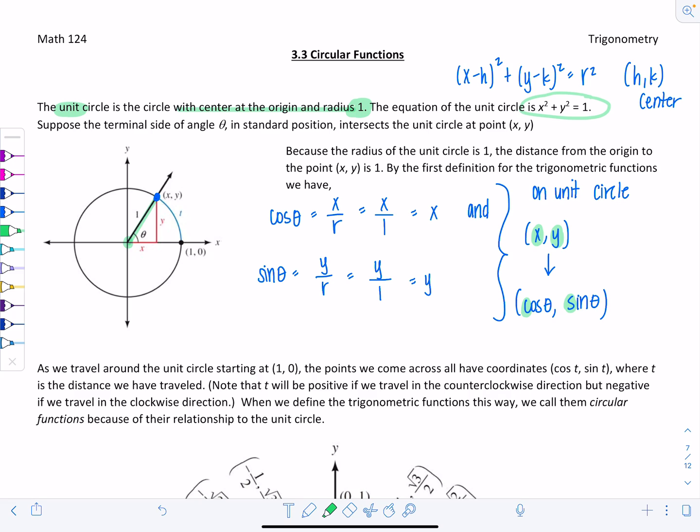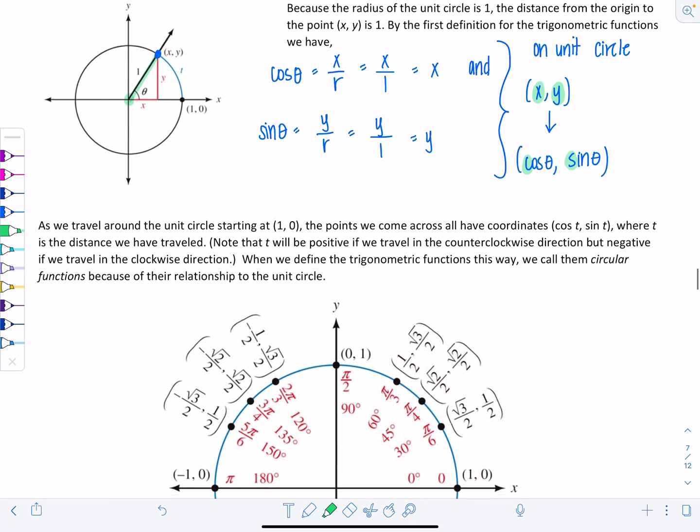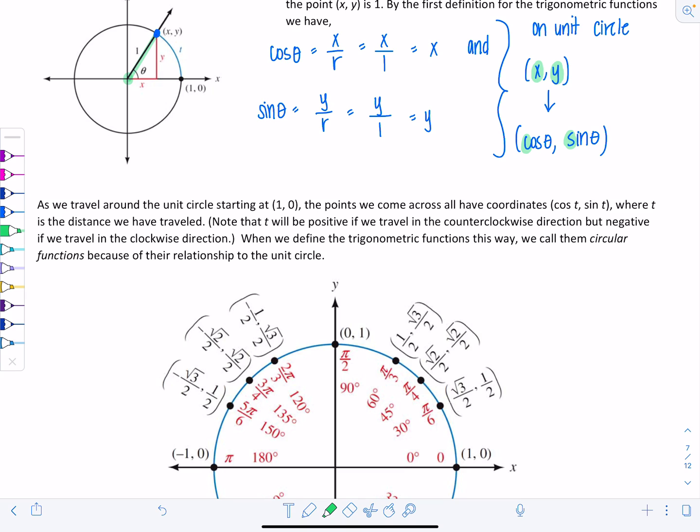As we travel around the unit circle starting at 1, 0, the points that we come across all have coordinates cosine of t, sine of t, where t is the distance traveled. t because we're talking in radians instead of degrees. Notice that t will be positive if we travel in the counterclockwise direction, but negative if we travel in the clockwise direction. When we define the trigonometric functions this way, we call them circular functions because of their relationship to the unit circle.